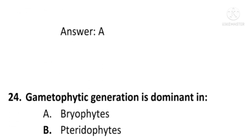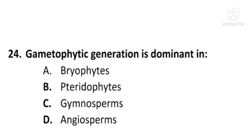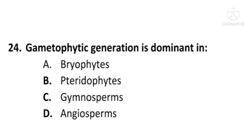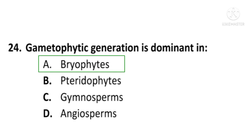Next question: The gametophytic generation is dominant in — A) Bryophytes, B) Pteridophytes, C) Gymnosperms, or D) Angiosperms. The correct option is A, Bryophytes. Gametophytic generation is dominant in bryophytes; A is the correct option.